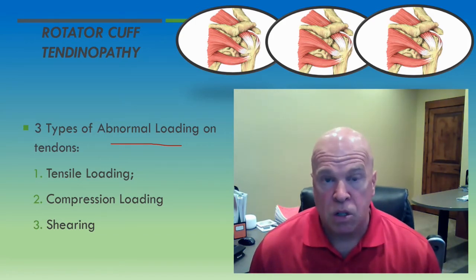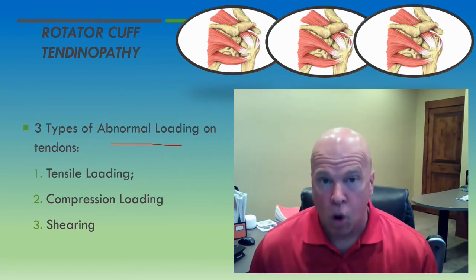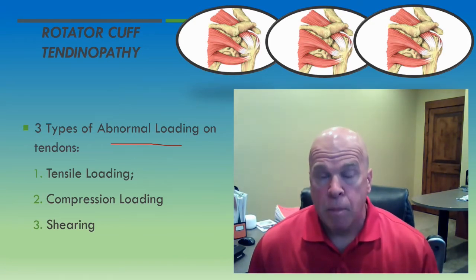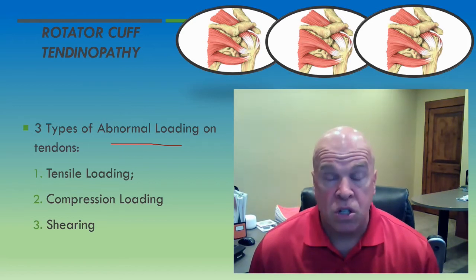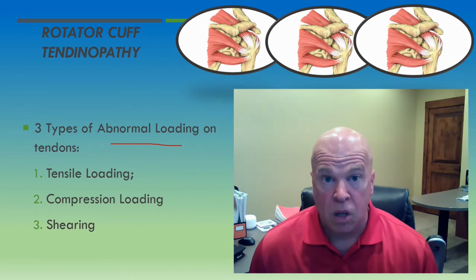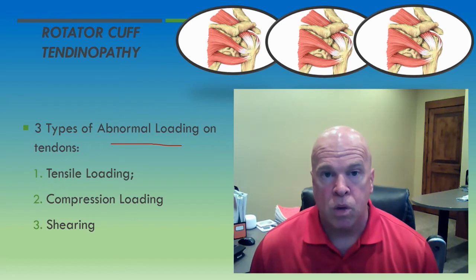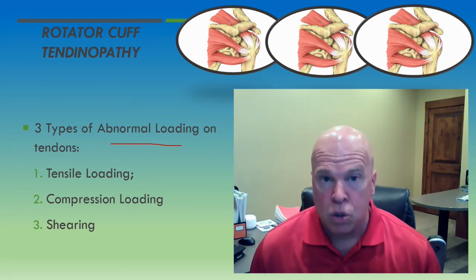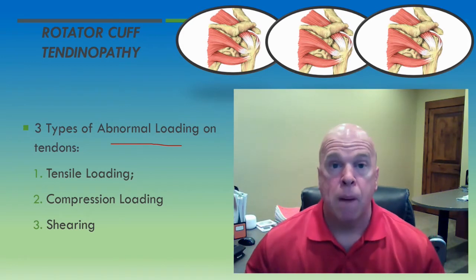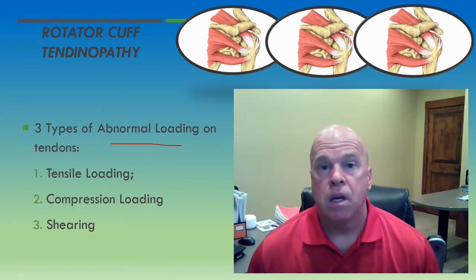Tendons can be subjected to two kinds of loads: normal loads and abnormal loads. In the presence of normal loading, tendons like muscle undergo an anabolic response — they get stronger, thicker, and stiffer, meaning more resistant to stretch. They fortify themselves in the presence of proper loading. That's the purpose of physical therapy — the skill and expertise of the therapist is to provide and introduce proper loads. Proper loads on tendons create a stronger, fortified tendon through an anabolic response.